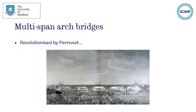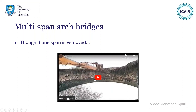The downside of that approach is you need more masonry. For multi-span bridges, the field was revolutionised by Peronet, a French engineer in the 18th century, who showed that you could get away with quite slender piers, long spans and quite insubstantial piers, if you actually constructed each of the spans together and then took the centring or the formwork supporting each arch away all at the same time.